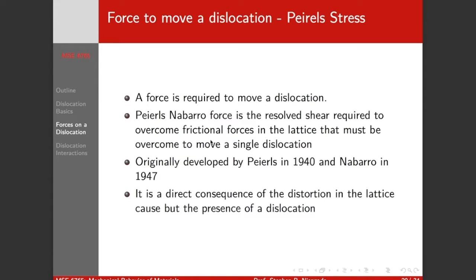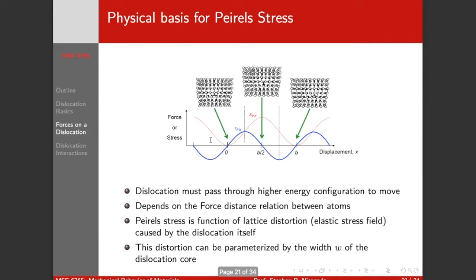It's completely a consequence of the distortion in the lattice caused by the presence of a dislocation. When we talk about plasticity and strengthening, we'll discuss obstacles in the path of dislocations. Here we're not talking about obstacles. The Peierls stress is in a perfect lattice, a single dislocation. It's just the frictional force caused by the distortion of the crystallographic lattice.